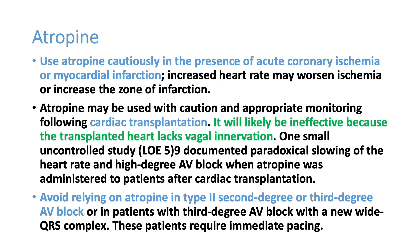Atropine should be used with caution in patients with acute coronary ischemia or myocardial infarction, such as inferior wall MI. If atropine is given early, the patient may develop tachycardia, which can aggravate ischemia. Atropine should also be used with caution after cardiac transplantation, as the transplanted heart lacks vagal innervation and atropine is likely to be ineffective. In second and third degree heart blocks, atropine generally will not work.